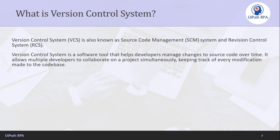Now let's understand what is version control system. Version control system is also known as source code management system and the revision control system. It is a software tool that helps developers manage changes to the source code over time, and it allows multiple developers to collaborate on a project simultaneously, keeping track of every modification made to the codebase.